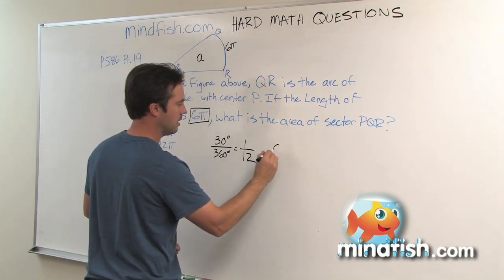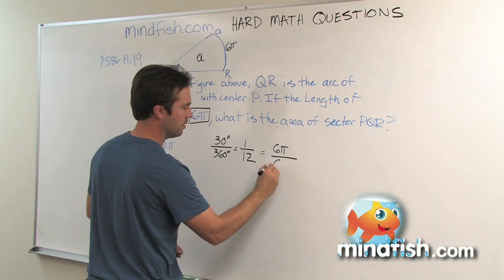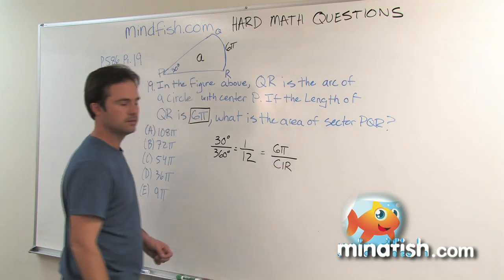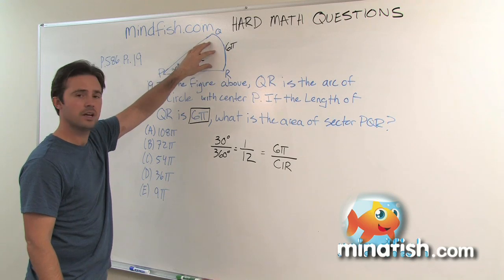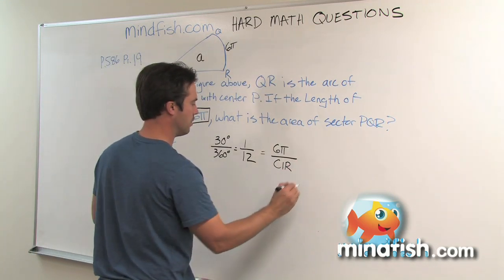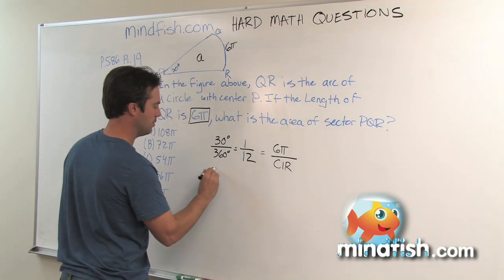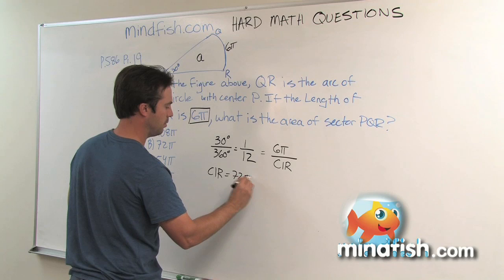That 6π has to be 1/12th of their circumference because if this little angle is 1/12th of the circle, then this little area is 1/12th of the entire circle's area. From that, we would cross multiply and we would solve that the circumference of the circle is 72π.